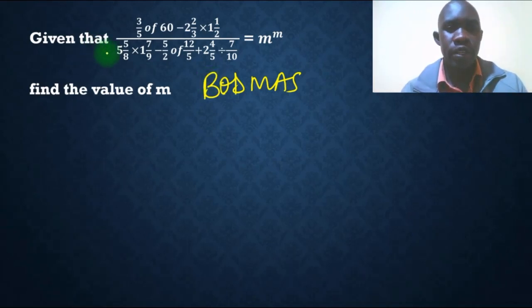And the question says that given that 3 over 5 of 60 minus 2 and 2 third times 1 and a half all over 5 and 5 over 8 times 1 and 7 over 9 minus 5 over 2 of 12 over 5 plus 2 and 4 over 5 divided by 7 over 10 is equal to m raised to m. Find the value of m.